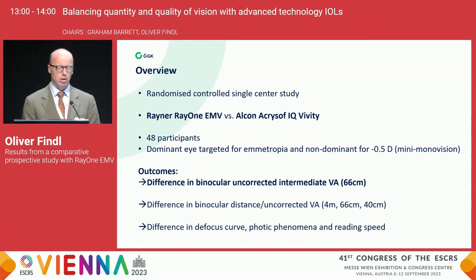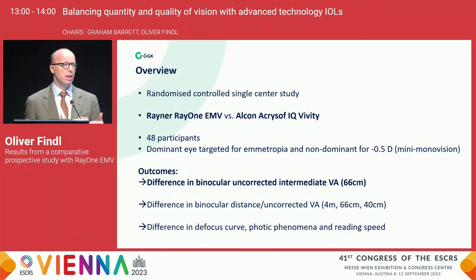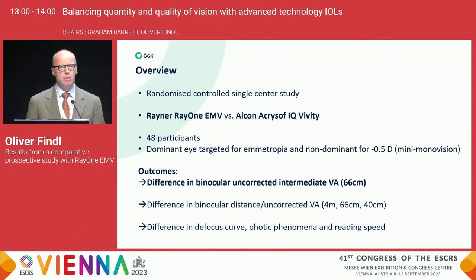It was quite ambitious to do this trial comparing the Rayner EMV, which you've heard quite a bit about, and the Alcon Vivity lens — which, as you've just seen, is really an EDOF lens, enhanced depth of focus. At least that's what most people would put it into. The Ray-1 EMV is really a monofocal plus. One of the reasons we go for monofocal plus is to try to have much less of the side effects that some EDOF lenses may have.